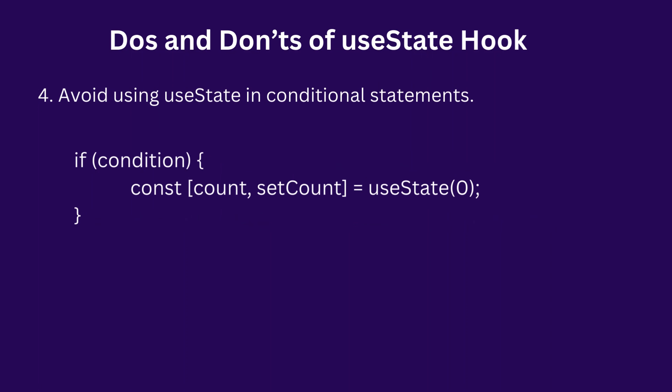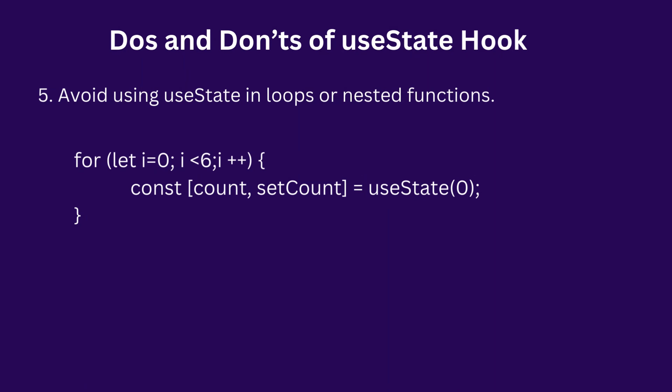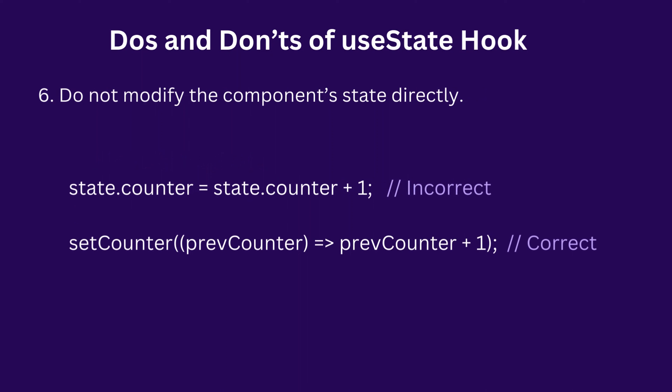Number four: avoid using useState in conditional statements. For example, if you put a useState inside an if-else condition, that is not right and should not be done. Similarly, avoid using useState in loops. And finally, do not modify the component state directly — which is the same as what we said previously: it is advisable to use a callback function when updating. Now that we have all that done, let's open our code editor where I explain this better and you can actually see how the useState works.